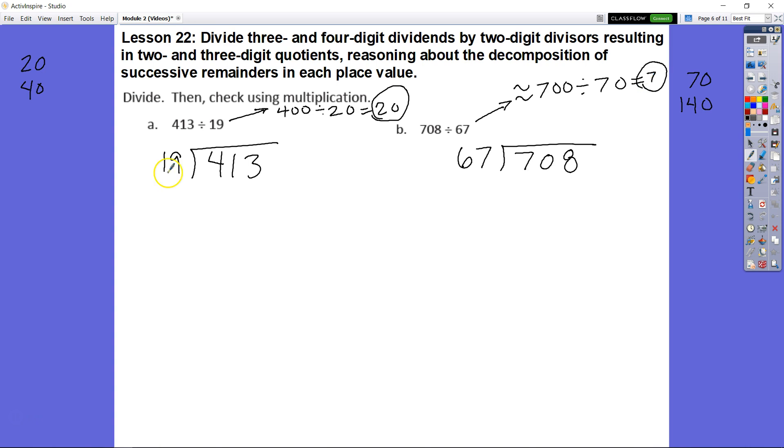Let's go ahead and look at A. Remember the directions are asking us to divide and then check using multiplication. So let's go ahead and write out our steps. Division. Multiplication. Subtraction. Bring down. And repeat.